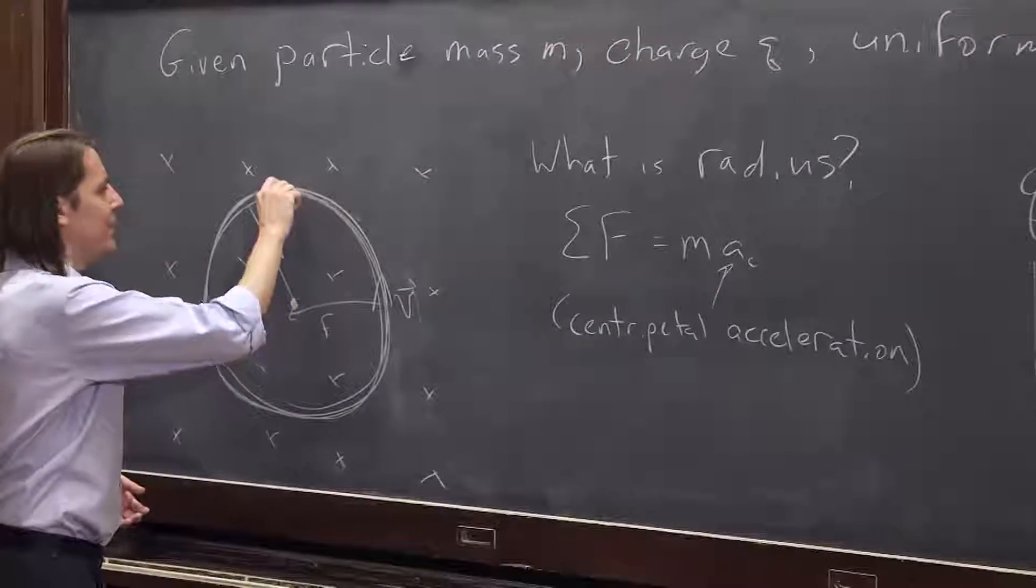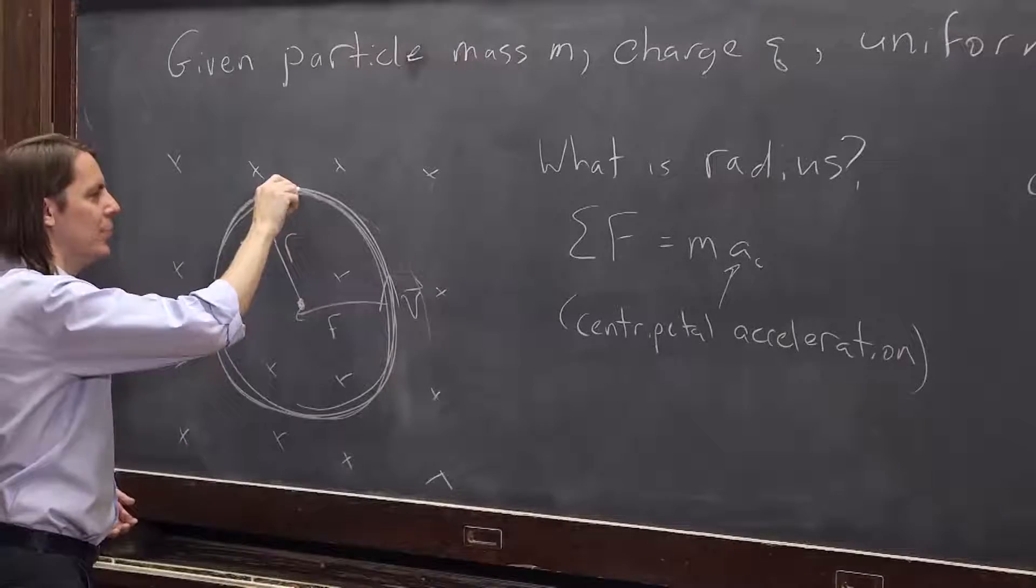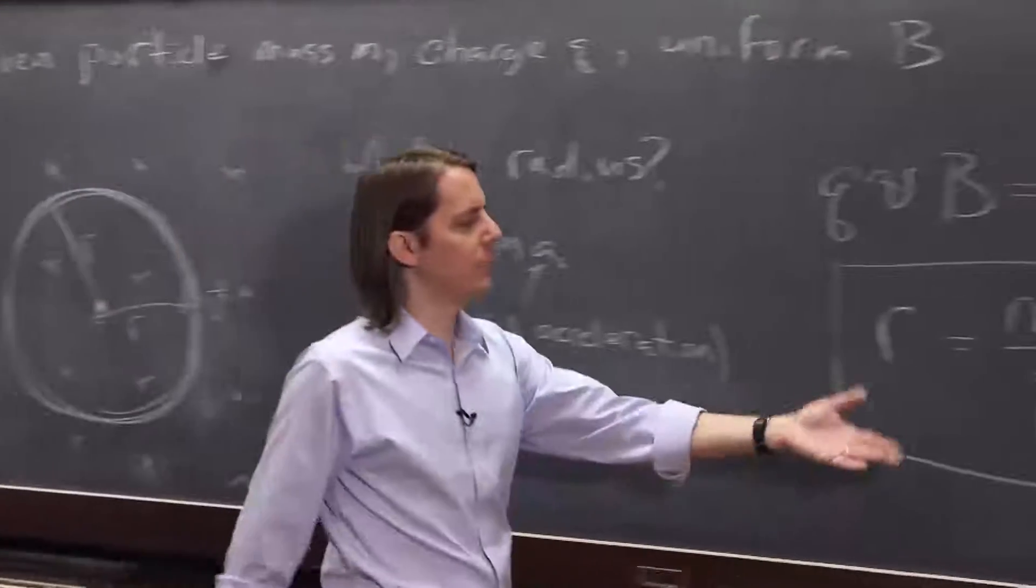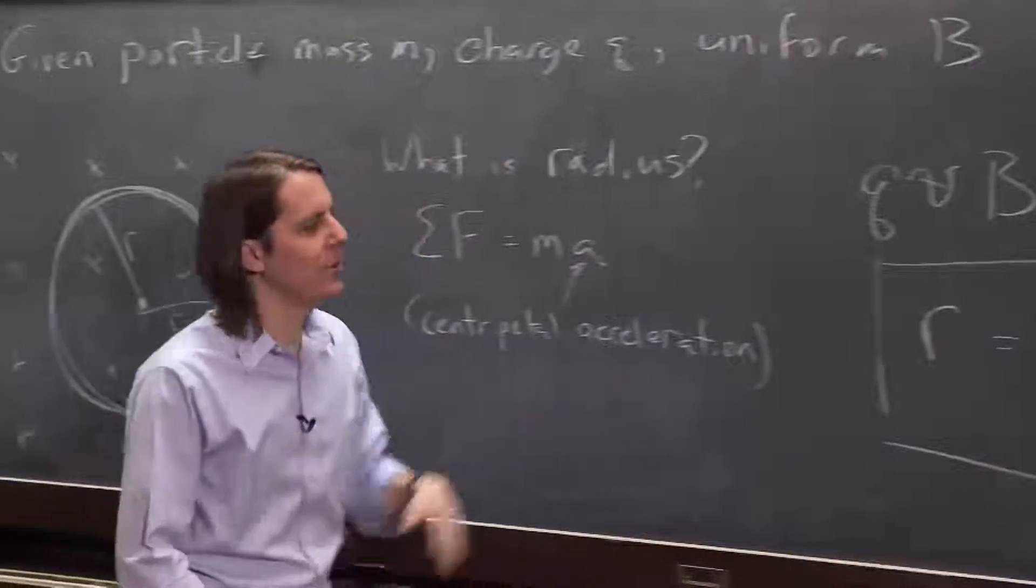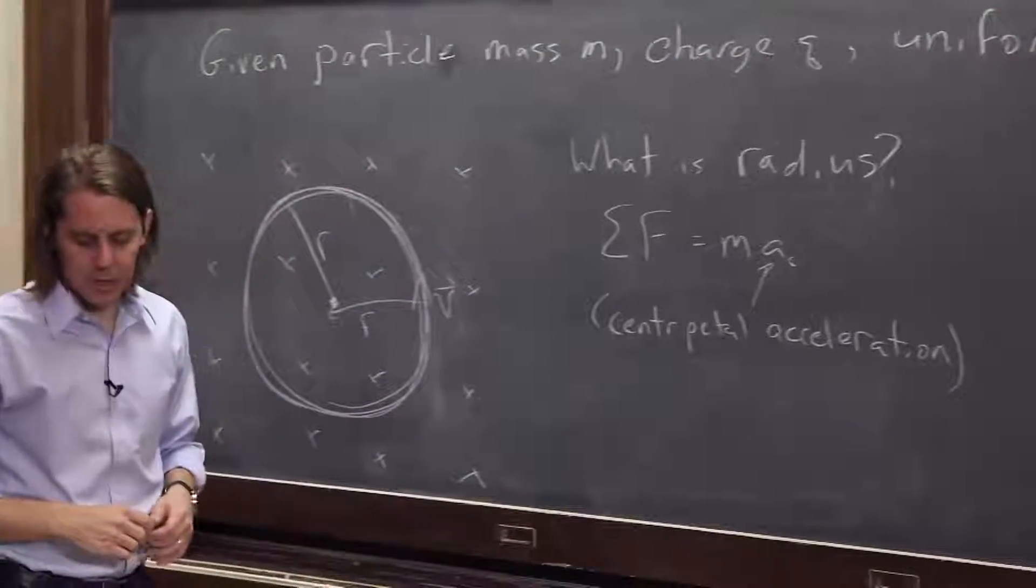The bigger the force, the bigger influence it has on the motion. So it's going to push it even harder. So therefore, the bigger q and b, the smaller the radius. So that one makes sense. The radius is m v over q b.